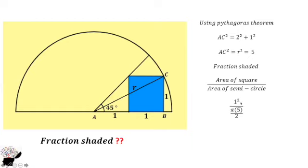So we have 1² divided by 5π/2. We know that r² is 5. So the final answer is 2 divided by 5π.